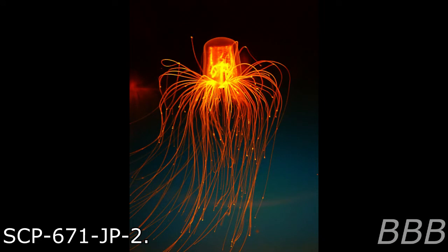SCP-671-JP is a species of aquatic organism similar to hydroids which has two remarkable anomalous properties. Firstly, SCP-671-JP is capable of directly using electricity as an energy source. Secondly, it can float in the air similarly as it does in water, surviving without any problems.